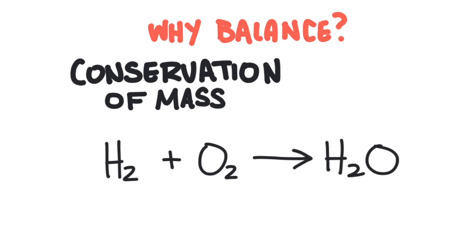Why do we need to balance chemical equations in the first place? We have to follow something called conservation of mass. Conservation of mass says that the total number of particles on one side of the equation must be equal to the total number of particles on the other side. So in this example we have two hydrogen atoms and two oxygen atoms — we have to have the same on the other side, or else we have disobeyed conservation of mass.